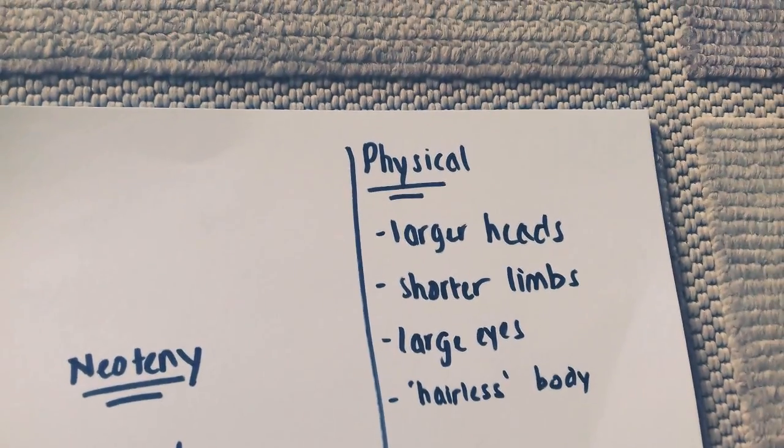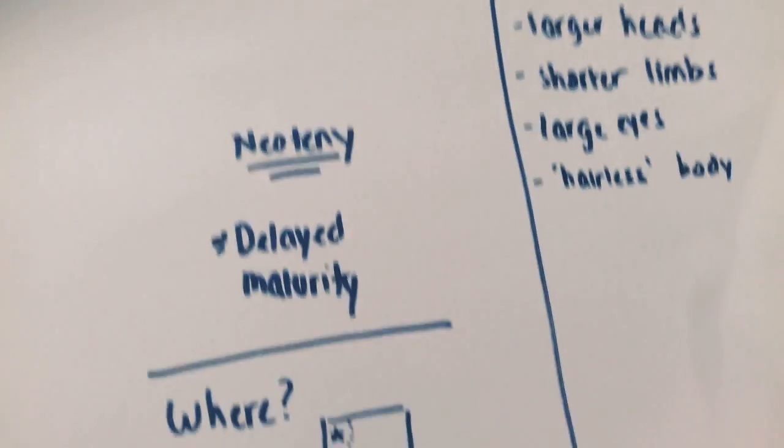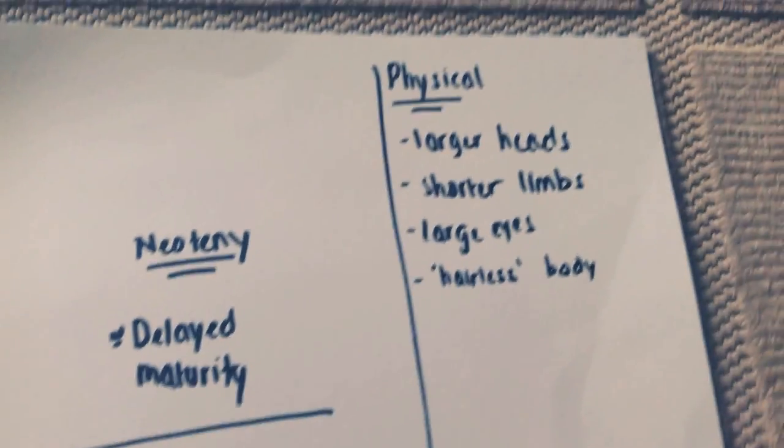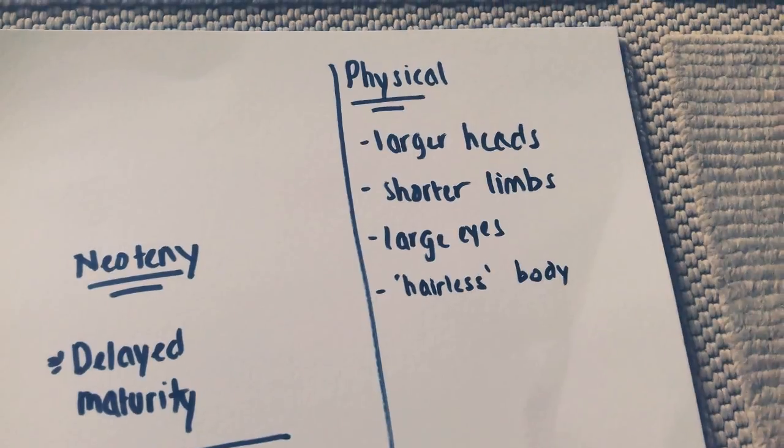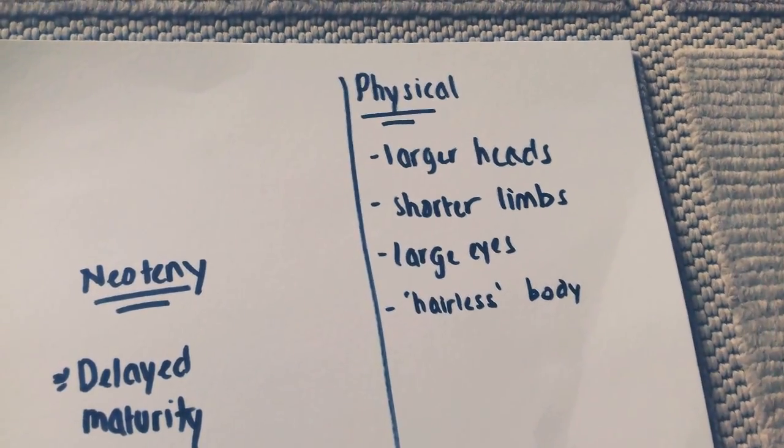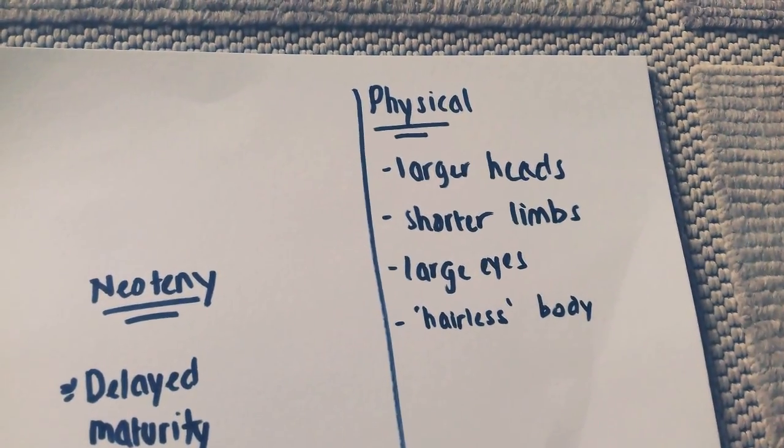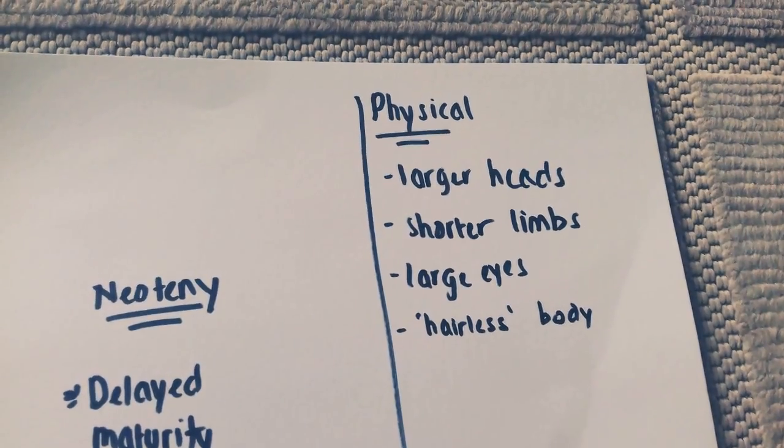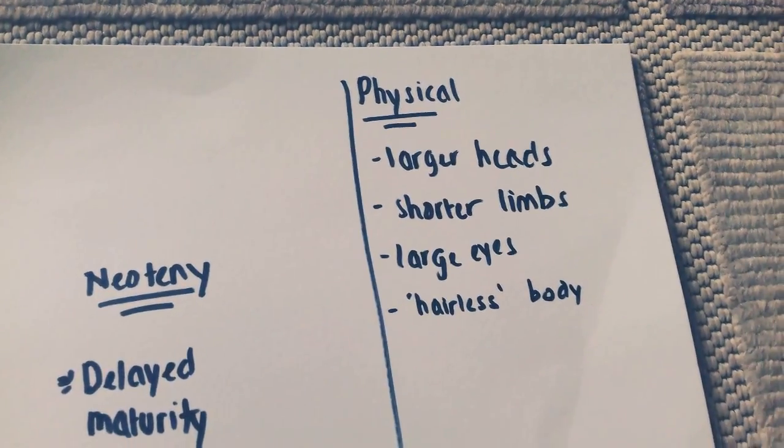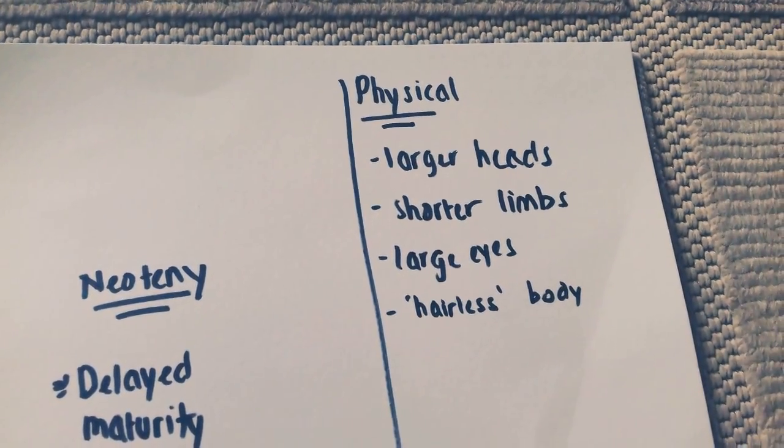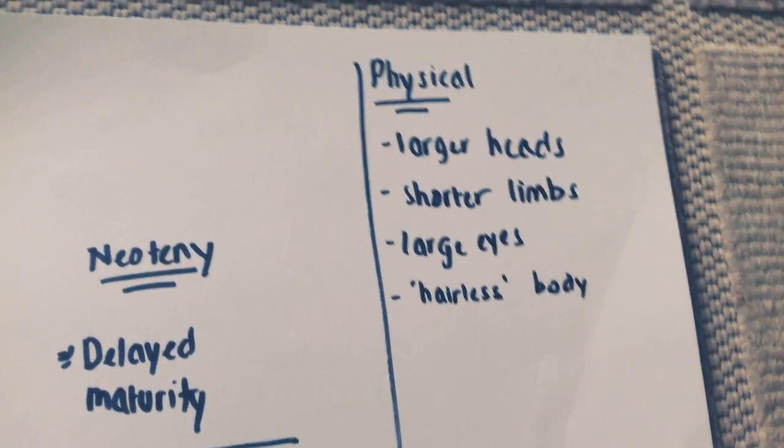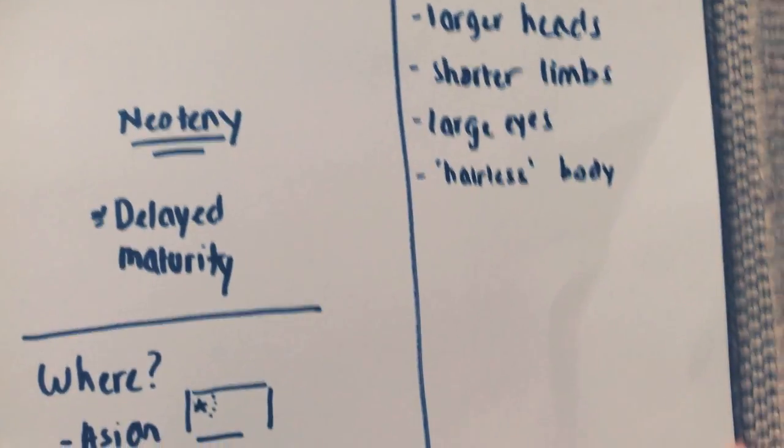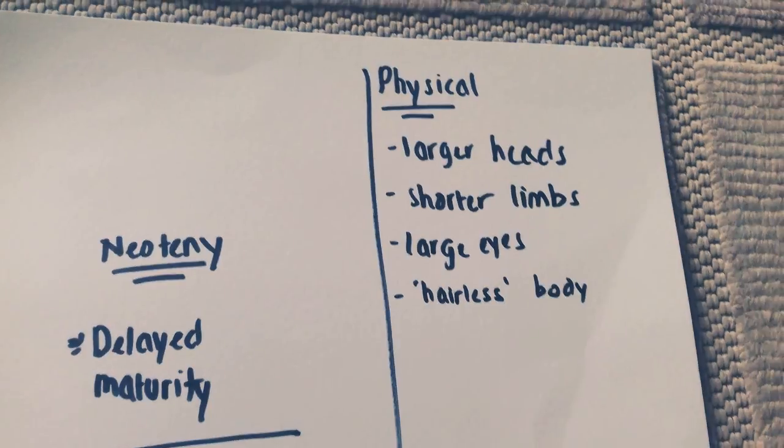Now, do you know why it's like this? Well, like I said, neoteny is delayed maturity. This is why Asians tend to have a more babyish face. We tend to have larger heads, shorter limbs, larger eyes, and hairless body. Well, of course, we have hair in parts where we should have hair. That's just physical traits.